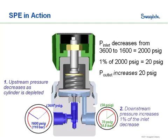So you can begin to see that supply pressure effect can have a negative impact on the performance of your regulators and on the performance of your system — especially if that outlet pressure starts to rise beyond a point that it's going to damage some instruments, maybe set off relief valves and waste products, or cause some sort of incident.